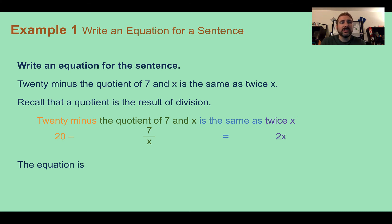So first recall that quotient means division. So knowing that, as we see here in different colors, we have 20 minus, so 20 and then subtract. The quotient of 7 and x, meaning 7 divided by x.